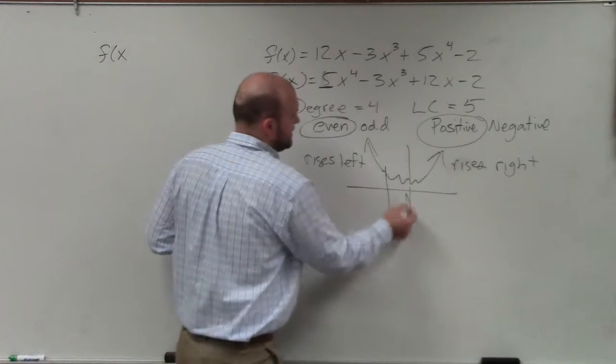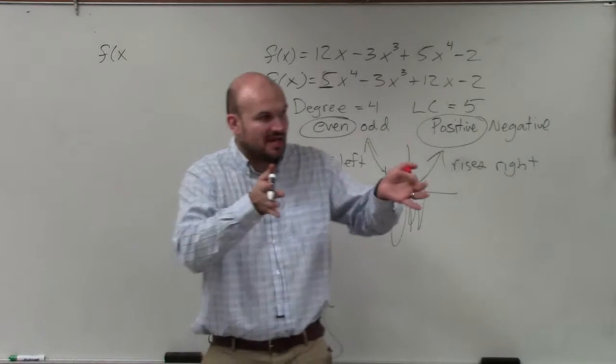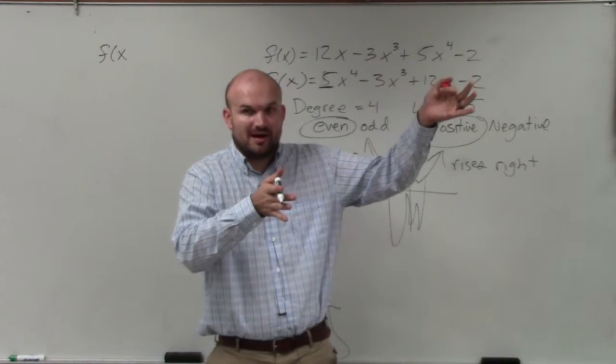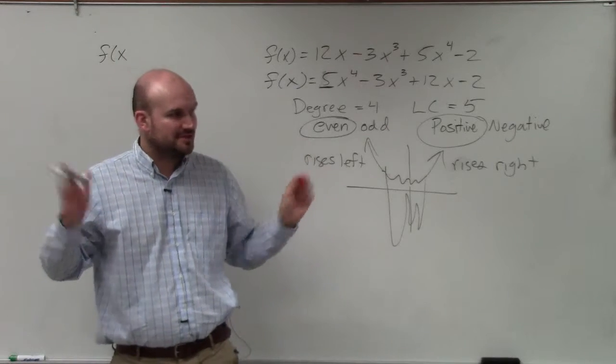It could be anywhere on the graph. We don't know where it is on the graph at all. We just know that as you go to the left, the graph is going to rise. As you go to the right, the graph is going to rise. But it could go like this. We have no idea what the graph looks like. The only thing end behavior tells you is when you go to the left, it tells you what the graph does. As you move to the right, it tells you what the graph does. That's all end behavior tells you.